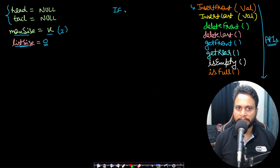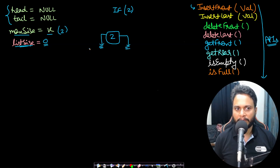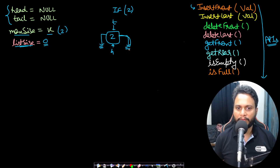If insert front is called with value 2, a new node with value 2 is made with next and previous initialized to null. Since head is null, head and tail are both set to the new node. To make it a circular deque, the tail's next pointer is made to point to head and the head's previous pointer is made to point to tail.